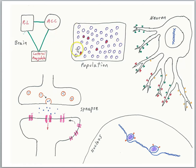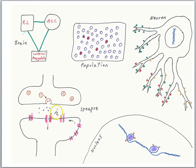Within a brain region, we have populations of neurons. A particular memory may only involve a subset of those neurons. And for each neuron that has thousands of synapses, it may only be a subset of synapses that are involved in a given memory. Synapses, we know, can change their strength, so synaptic plasticity will be part of the story for the engram.